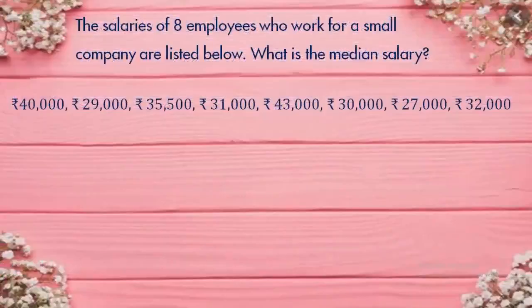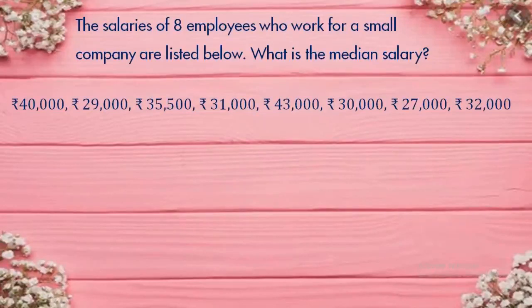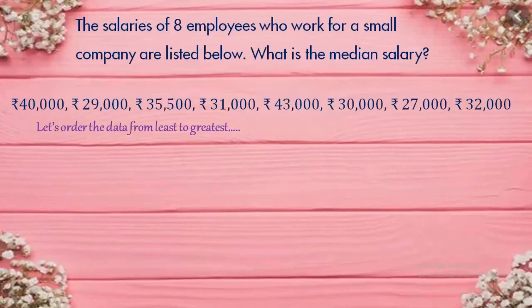Let's do another problem. The salaries of eight employees who work for a small company are listed below. What is the median salary? The salaries are: Rupees 40,000; Rupees 29,000; Rupees 35,500; Rupees 31,000; Rupees 43,000; Rupees 30,000; Rupees 27,000; and Rupees 32,000. Eight salaries are given here. We are going to arrange them from least to greatest.